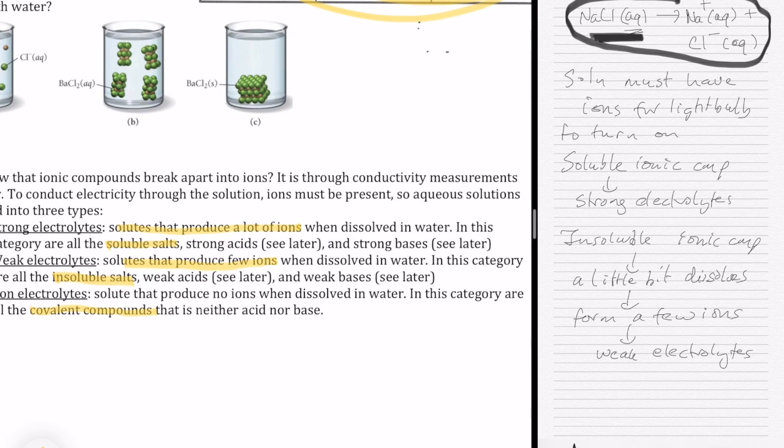We haven't talked about these two other categories that are shown here, which are strong acids, strong bases, and later on weak acids and weak bases. We're going to talk about them later, but right now, strong electrolytes are the soluble salts, weak electrolytes, insoluble salts, non-electrolytes are the covalent compound.